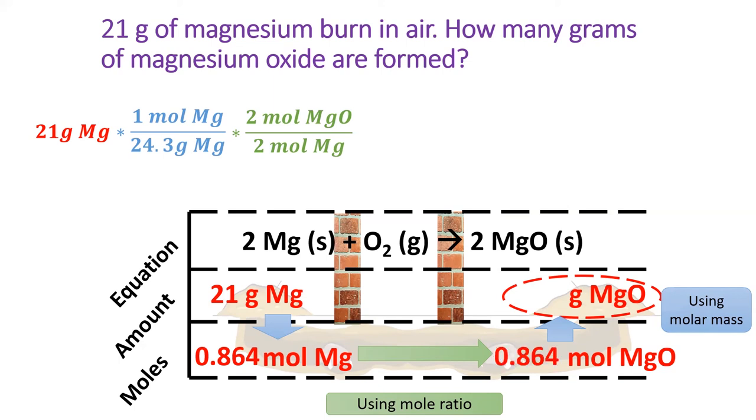If we stopped our calculation right here, we would have converted to moles of magnesium oxide, but we're not done yet. Lastly, we'll use the molar mass of magnesium oxide to convert from moles to grams. Plugging it into our calculator will give us the answer. Notice that unit cancellation in the equation tells us the story of our conversion steps.